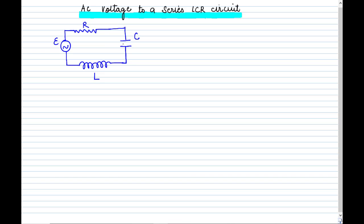This is an LCR circuit — resistance, capacitance and inductance — and these three are connected in series, meaning end to end, connected to an AC voltage source. This is a sinusoidally varying voltage, so wherever we use this symbol, it means a sinusoidally varying AC voltage. The voltage is given by V = Vm sin(ωt), where Vm is the maximum amplitude and ω is the angular frequency.